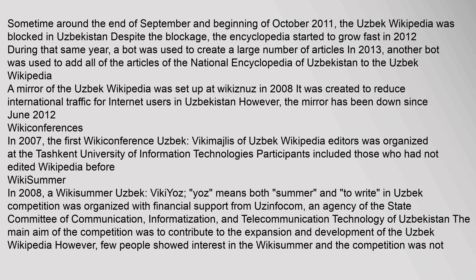Sometime around the end of September and beginning of October 2011, the Uzbek Wikipedia was blocked in Uzbekistan. Despite the blockage, the encyclopedia started to grow fast in 2012. During that same year, a bot was used to create a large number of articles. In 2013, another bot was used to add all of the articles of the National Encyclopedia of Uzbekistan to the Uzbek Wikipedia. A mirror of the Uzbek Wikipedia was set up at Wikinas in 2008 to reduce international traffic for Internet users in Uzbekistan. However, the mirror has been down since June 2012.